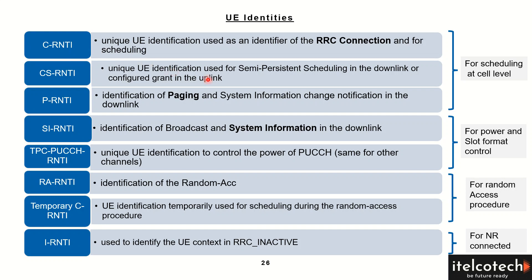Similarly, if the UE is having semi-persistent scheduling, which is not continuously happening in the downlink and configured or granting the resources in the uplink, in that case it is in the CS-RNTI scenario. This is the identity the UE is holding at that point in time.